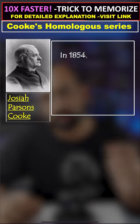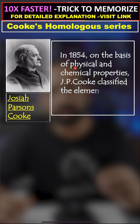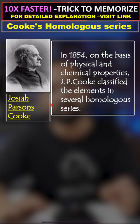Hello my dear friends. Today we are going to cover Koch's homologous series. In 1854, on the basis of physical and chemical properties, J.P. Koch classified the elements into several homologous series.